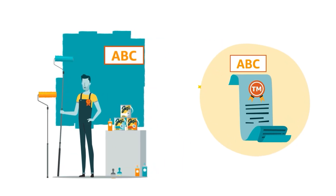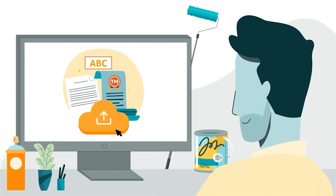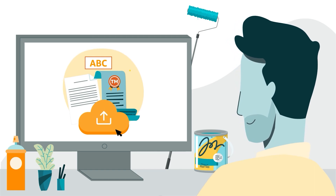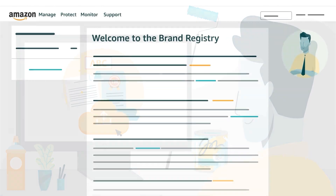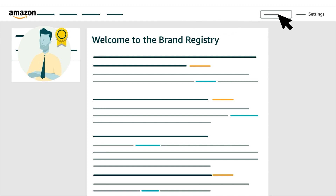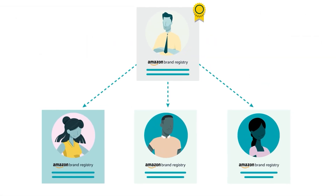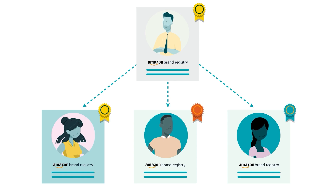The Rights Owner role designates the seller who enrolled the brand as the owner of its trademark. They submitted verification of that trademark during the enrollment process. The Rights Owner role is also what gives the seller's account access to each tool on Amazon Brand Registry. The Administrator role gives the seller access to user permission settings on Amazon Brand Registry, which they can use to affiliate other Brand Registry user accounts and assign roles.